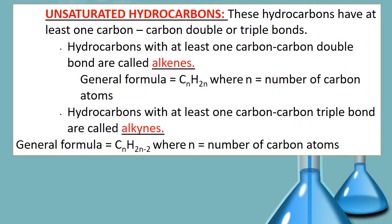Now let us study about unsaturated hydrocarbons. These hydrocarbons have at least one carbon-carbon double bond or triple bond. So even if there is one double bond between carbon and carbon atom it will be called as unsaturated. The least required is that there should be one double bond or triple bond. As soon as there is one or two triple bonds or a double bond, that particular hydrocarbon is called as unsaturated.